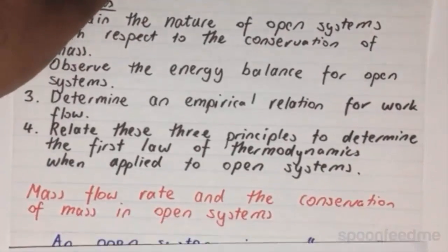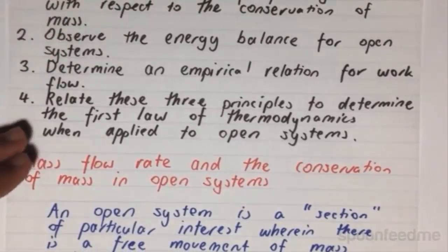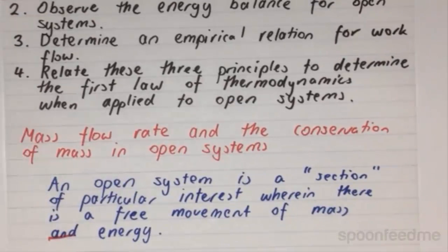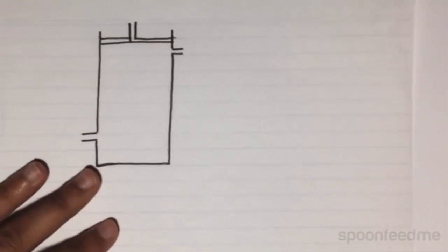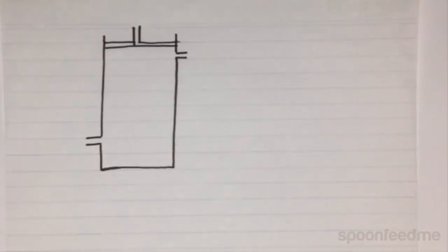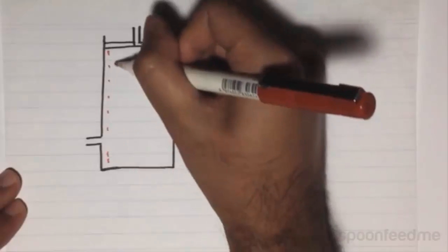So what exactly is an open system? An open system is a section of particular interest, wherein there is a free movement of mass and energy. To take this example here, we have a piston cylinder arrangement, wherein the section of the system that we are interested in, is this right here.